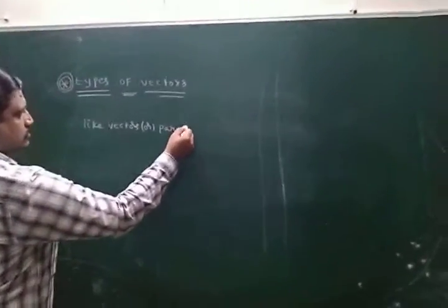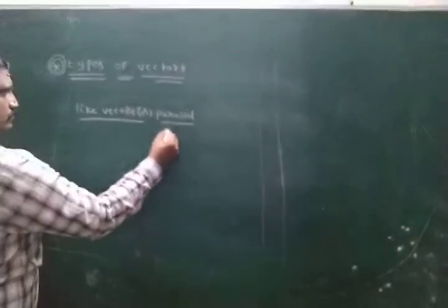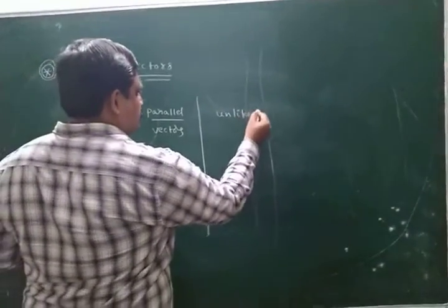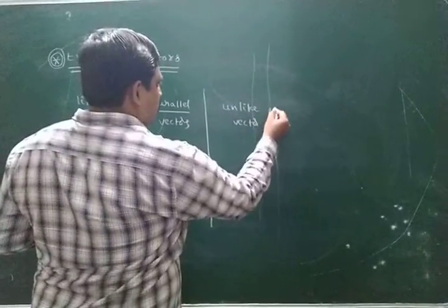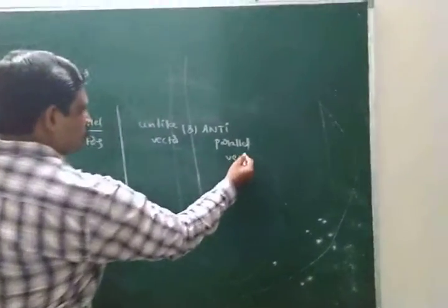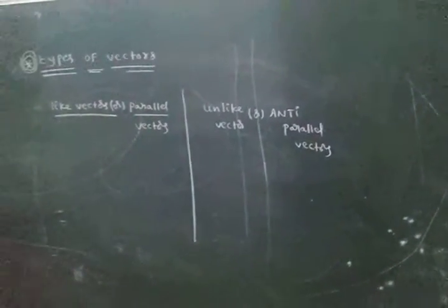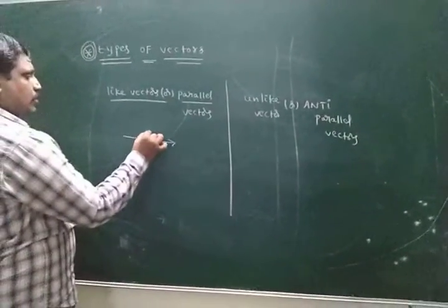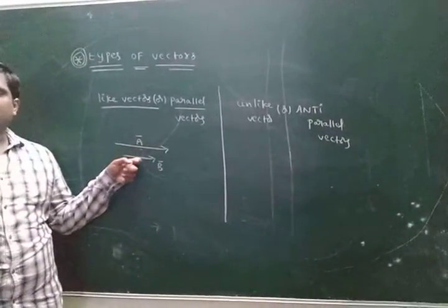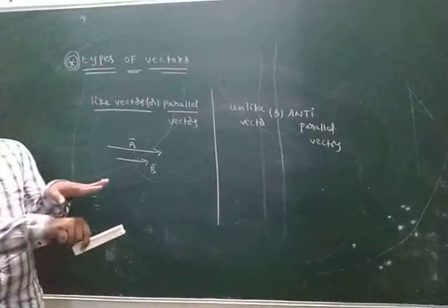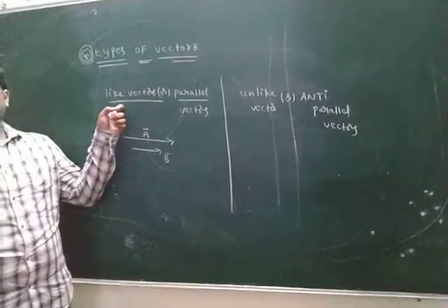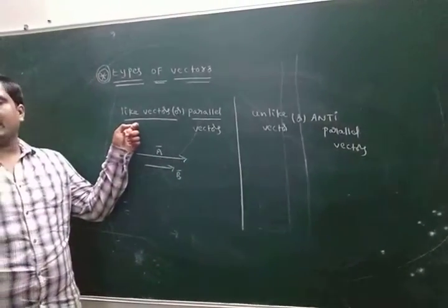What are parallel vectors? Like vectors: this is vector A bar, this is vector B bar. Look at the diagram — here two vectors have different magnitudes but are in the same direction. Those two vectors are called like vectors, or parallel vectors.